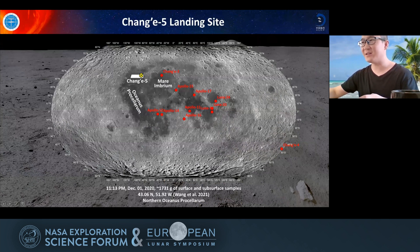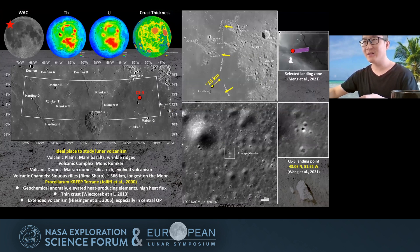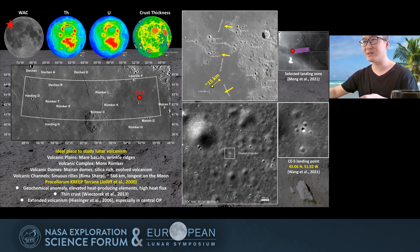Where is the Chang'e-5 mission landing site? The landing site is in the northern Oceanus Procellarum, to the west of Mons Rümker. The Chang'e-5 landing site is within the Procellarum KREEP Terrain, which is a geochemical province with elevated heat-producing elements and a very thin crust. Because of this, this may be the reason why the Chang'e-5 landing site developed some of the youngest lunar mare basalt, which I will describe later.